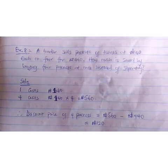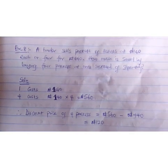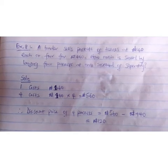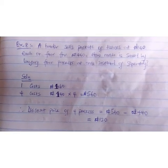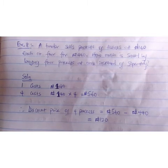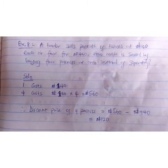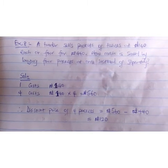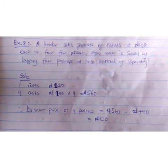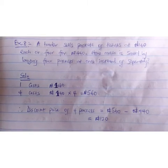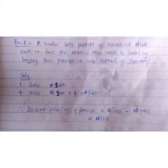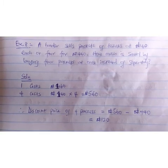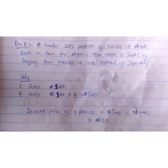Example 8: A trader sells packets of tissues at 140 naira each, or 4 for 440 naira. How much is saved by buying 4 packets at once instead of separately? One costs 140 naira, so 4 will cost 140 times 4, which is 560 naira. The saving on the price of 4 packets will be 560 naira minus 440 naira, which leaves us with 120 naira.